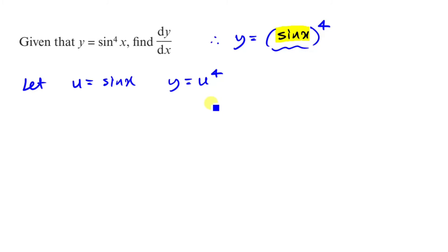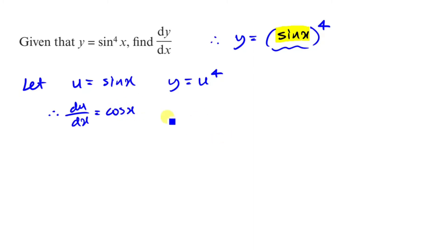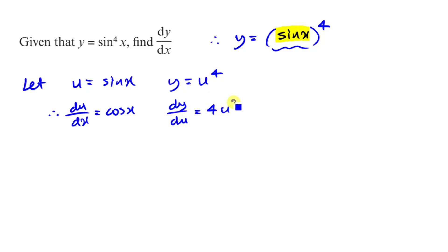Now let's go ahead and differentiate both of them. We've got du over dx, which is always going to be cos x — sin becomes cos. And then for the y expression, dy over du: if you differentiate that you get 4u to the power of 3.